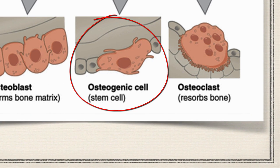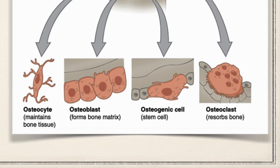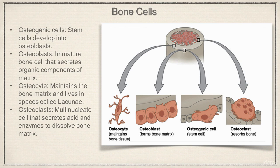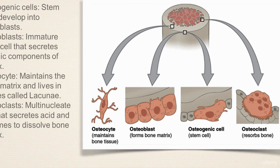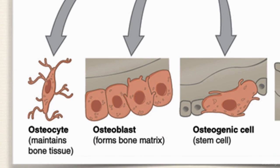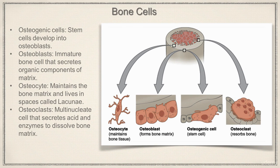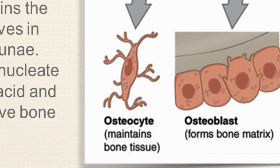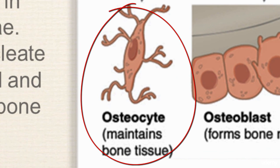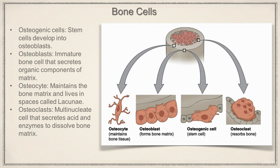Osteogenic cells are the stem cells — they're undifferentiated. When we need more osteoblasts, they will differentiate into osteoblasts. Osteoblasts are immature bone cells that secrete organic components of the matrix; in other words, osteoblasts make bone. Osteocytes, which are the mature osteoblasts, maintain the bone matrix and live in little spaces called lacunae.